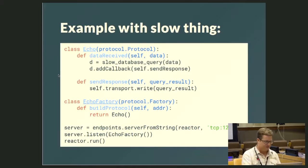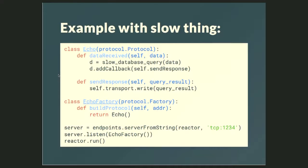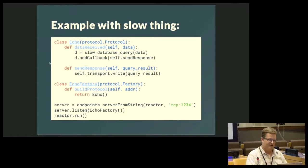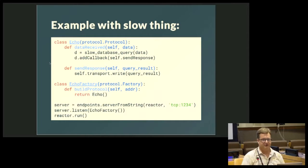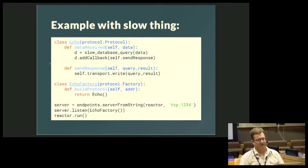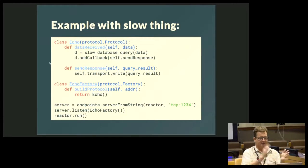What if we add a slow thing? This is the same example except now we have a slow database query. We don't want it to slow up anybody else who wants to use our echo server. What we can do is create what's called a deferred — also known as a future in async I.O. — and we can give it a callback, in this case a send_response that will get whatever the result of the query was, then write that out to the transport. So while the slow database query is running, you can be doing lots of other stuff — accepting other connections, starting other database queries — which is pretty cool.